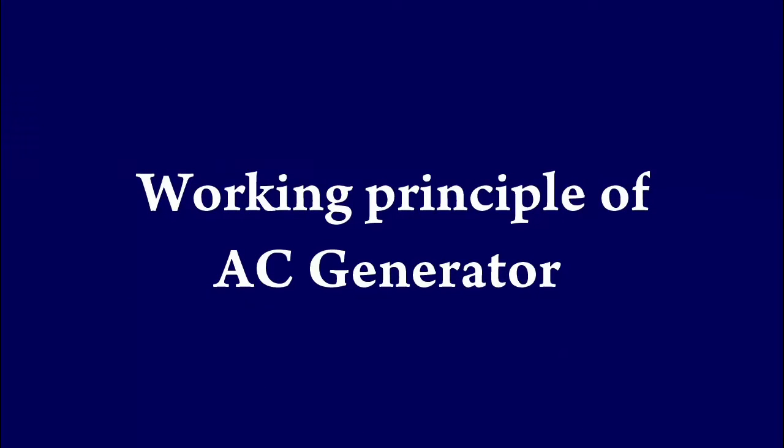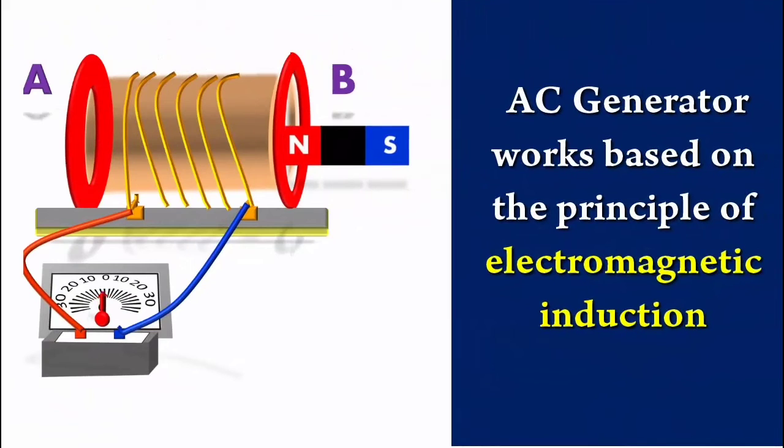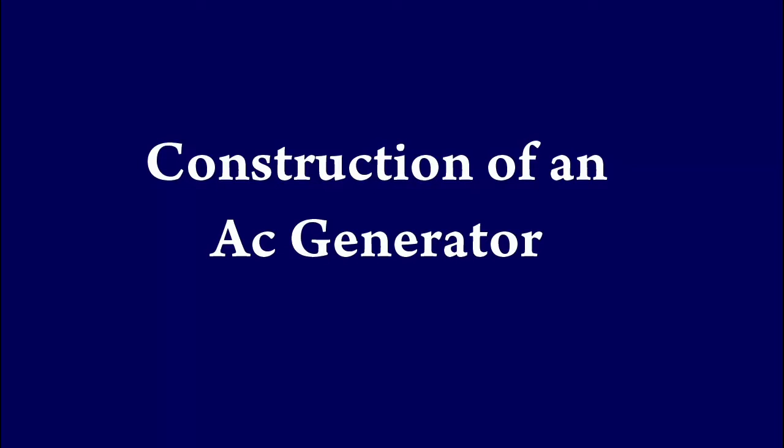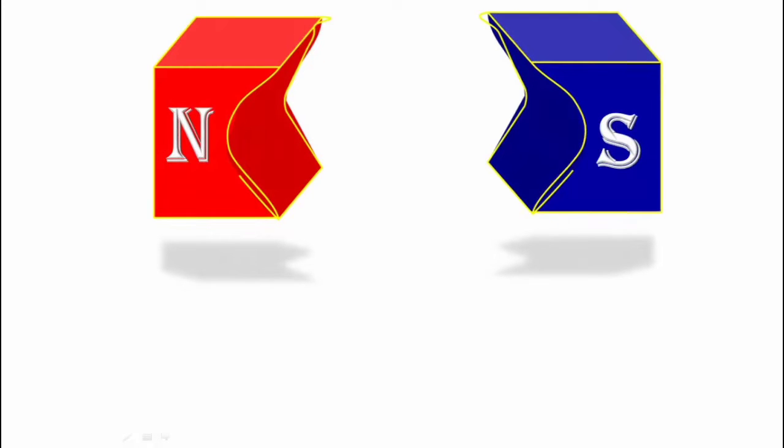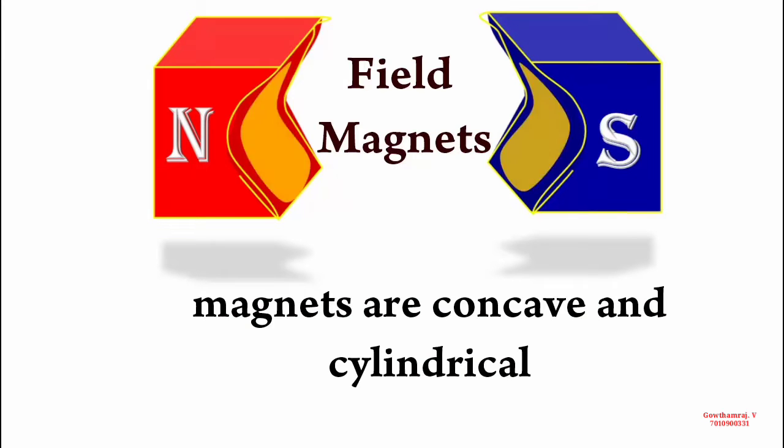AC generator works based on the principle of electromagnetic induction. Now let's see how the different parts of generator are constructed. First is the field magnet, usually a permanent magnet which is very strong. The poles of field magnets are concave and cylindrical and therefore produce a radial magnetic field.